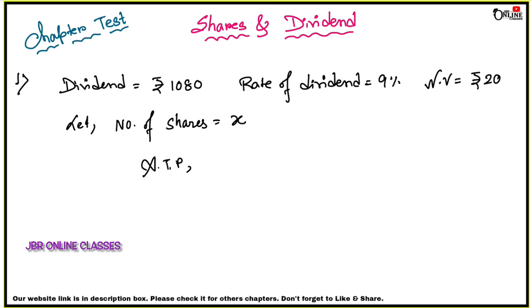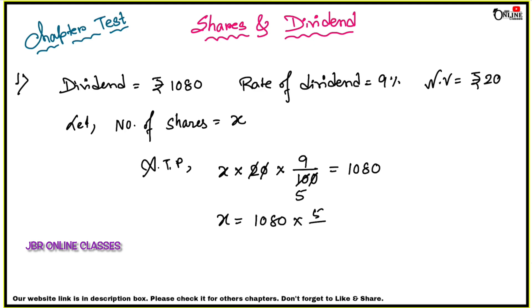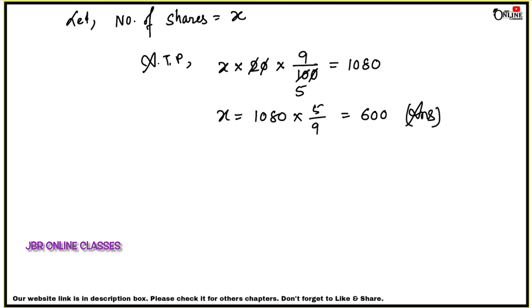Apply the dividend formula: total dividend equals number of shares into nominal value into rate of dividend. So x into 20 into 9 by 100 equals 1080. The zeros cancel, giving x equals 1080 into 5 by 9, which equals 600. So the total number of shares is 600 — that is your answer.